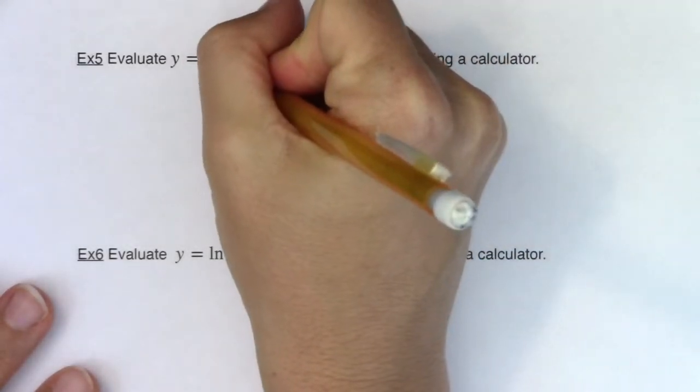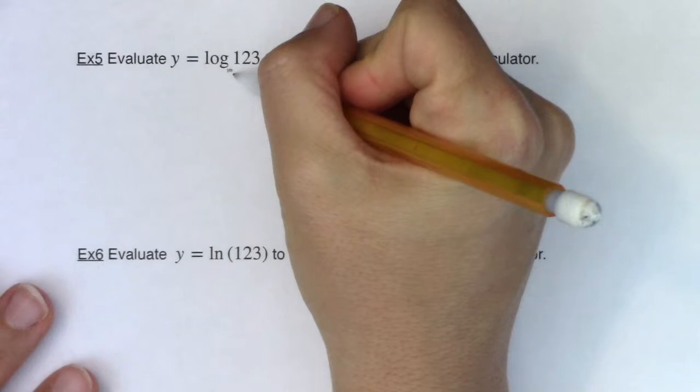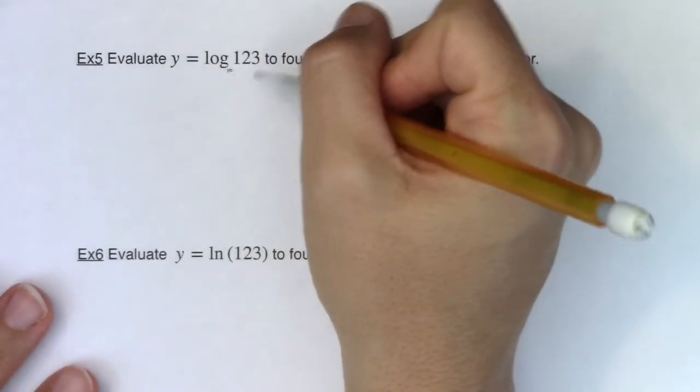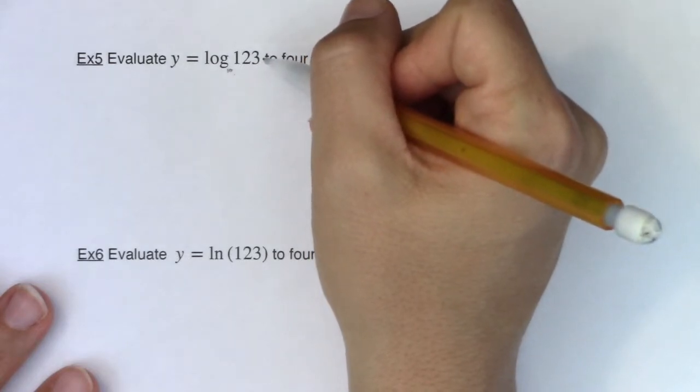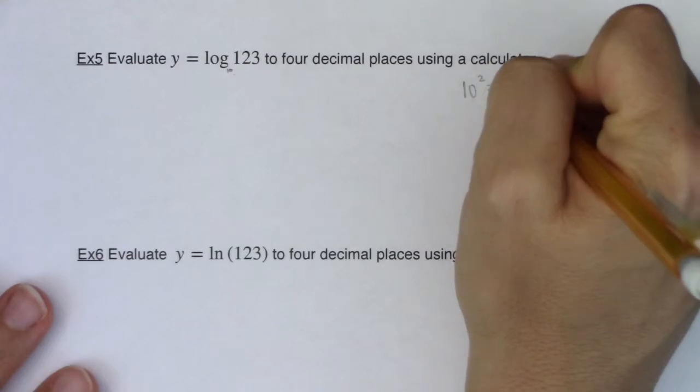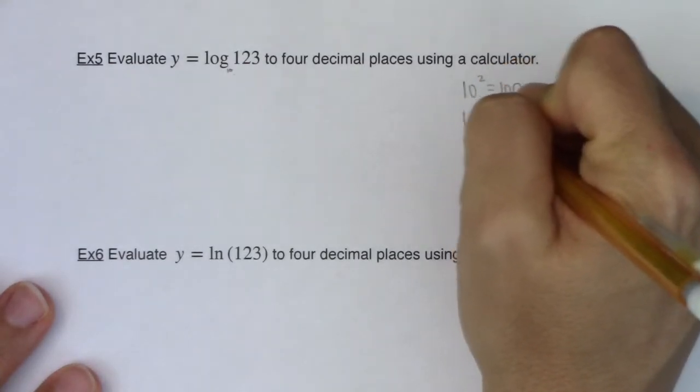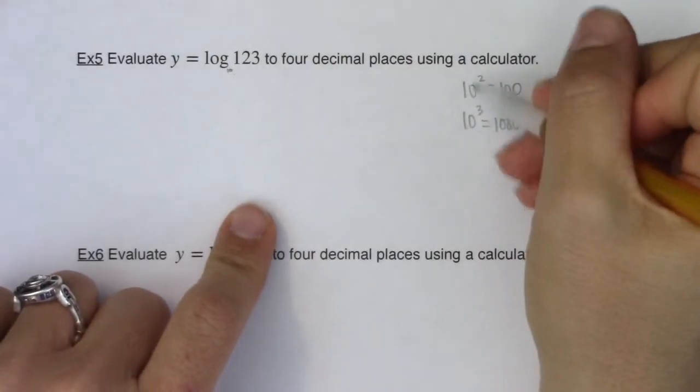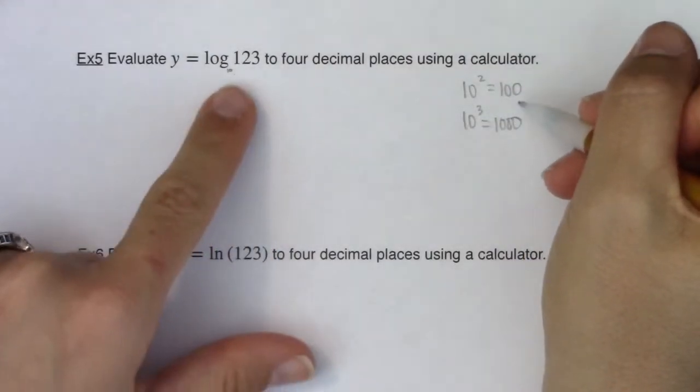I put using a calculator here because we'd have to use a calculator. The base of this logarithm, it's a common log, the base is 10. The argument is 123 and 123 is not an integer power of 10. We know 10 squared is equal to 100, and 10 cubed is equal to 1,000, but there's no integer exponent on 10 that will get me 123.